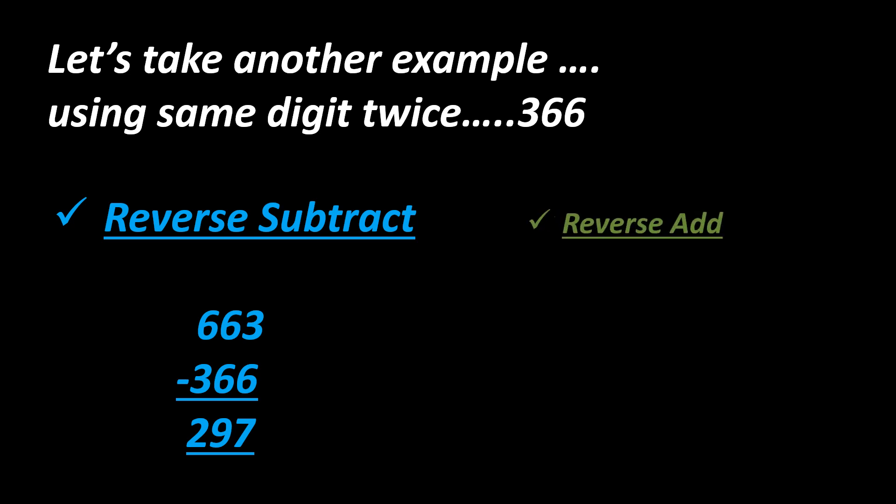Let's reverse add: 297 plus 792, and here is your answer: 1089.